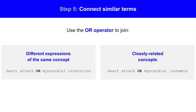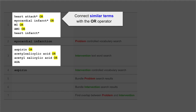Step 5: Connect similar terms. Use the OR operator to join different expressions of the same concept, as well as closely related concepts. Here's the search strategy connecting similar terms with the OR operator. The search results will have any combination of these terms.